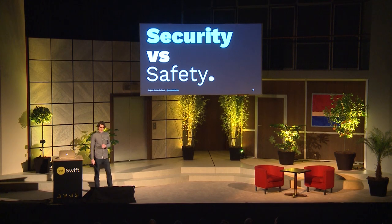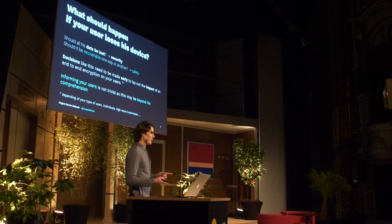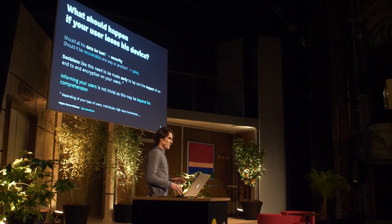Another implication of end-to-end encryption is a decision between security and safety. What should happen if your user loses their device? Should all their data be lost, which is security? Or should they be able to recover it one way or another, which is safety? Decisions like this need to be made really early in the process because they will have deep implications on your UX and all your UI. And informing the user about those kinds of things is not trivial because it can be way beyond their comprehension.